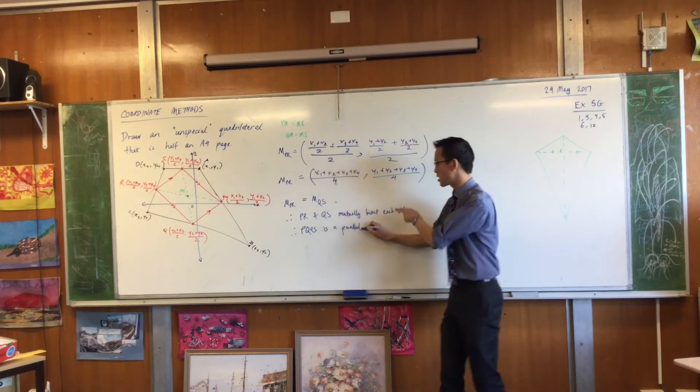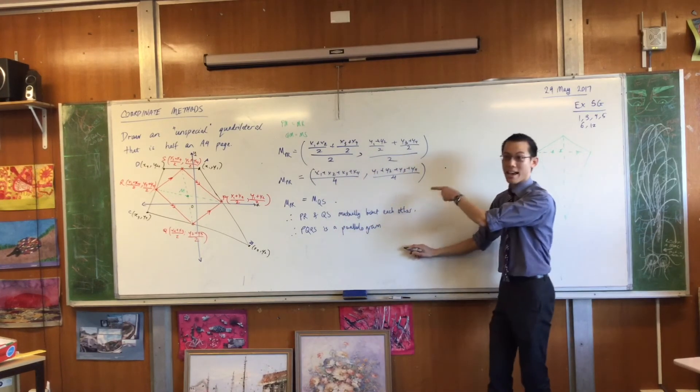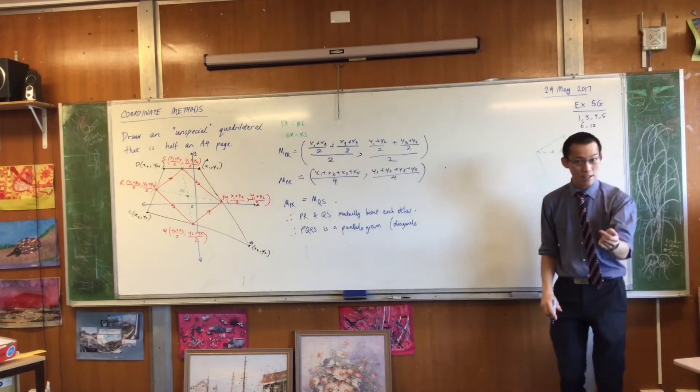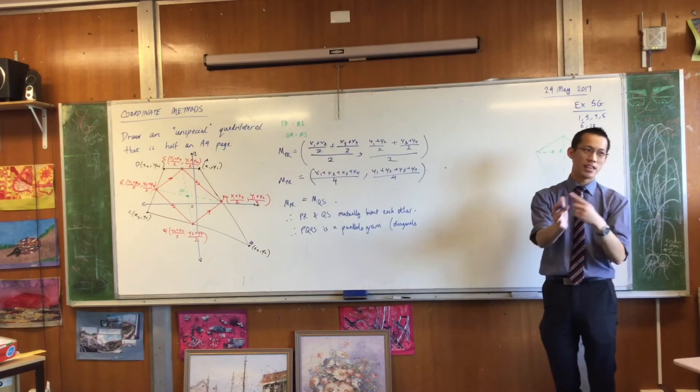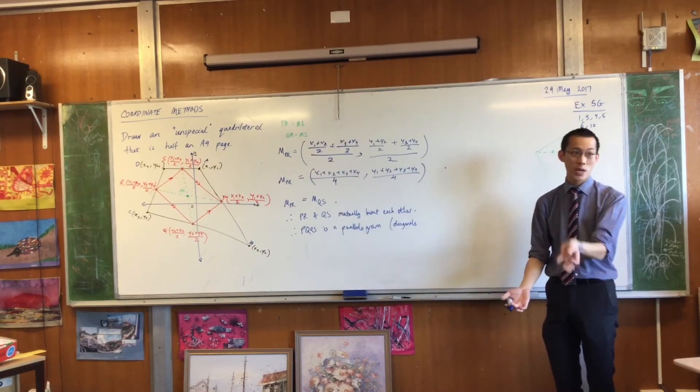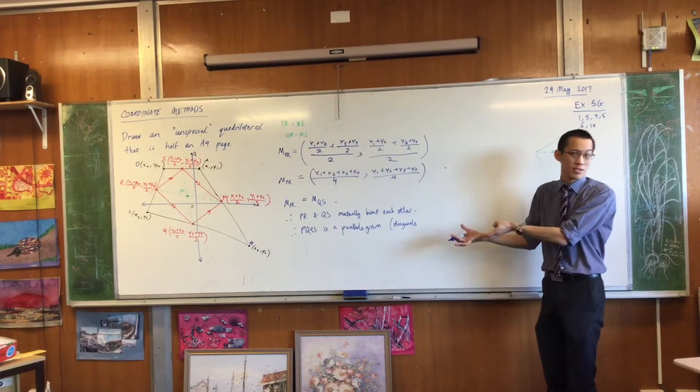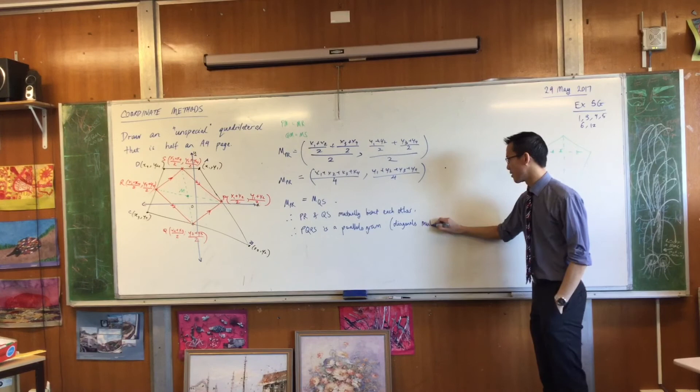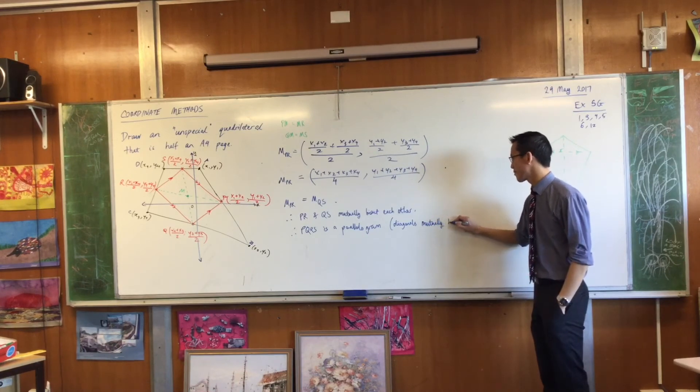Because this property here of diagonals, mutually bisecting, is a property that only parallelograms have. Which is why subsequently rectangles have them, rhombuses have them, and squares have them. Because they're all just fancy versions of parallelograms. Does that make sense? Diagonals mutually bisect.